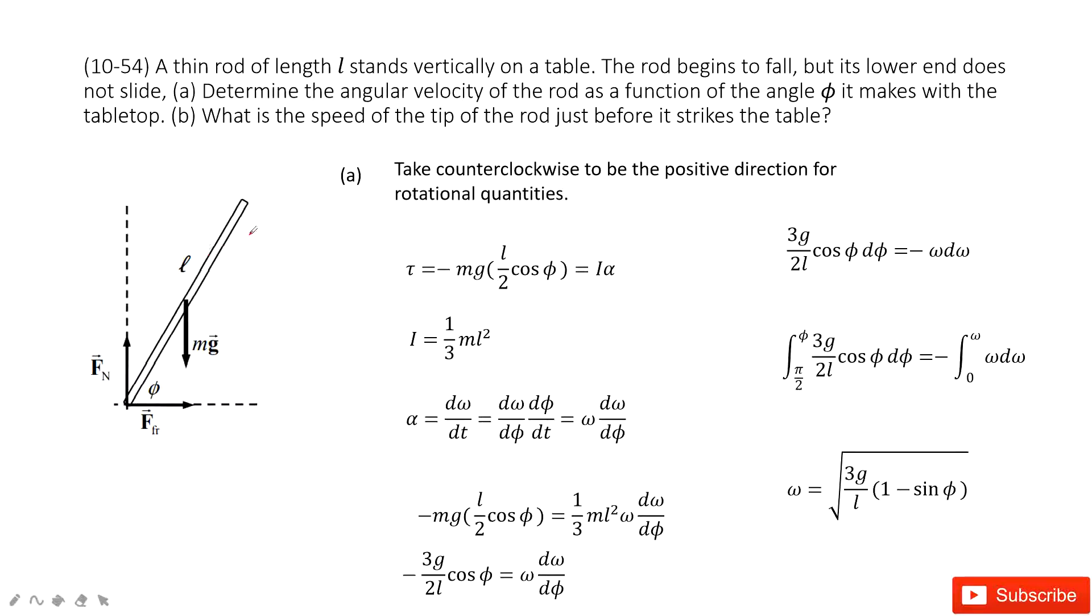We can see we have a thin rod. The length is given and the mass is given. It began to fall down. Initially, it is there. Finally, it is there.